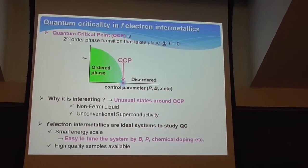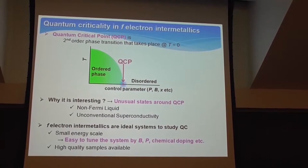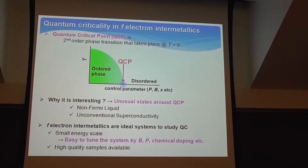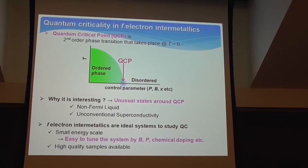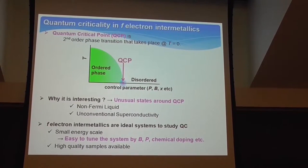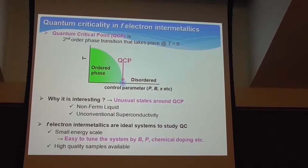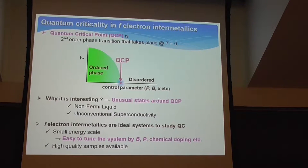The quantum critical point is the second-order phase transition that takes place at T equals zero. As shown here in the schematic phase diagram, if we suppress the ordered phase by tuning control parameters such as pressure, field, or doping, then the quantum critical point appears on the border of the ordered phase. This is very interesting because a lot of unusual things have been found in the vicinity of this QCP, such as non-Fermi-liquid behavior and unconventional superconductivity.